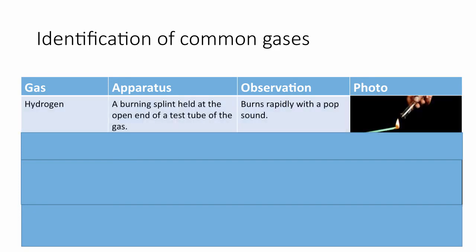So the first gas is hydrogen. And as you may know, this is a burning splint or a lighted splint. It's held at the end of the test tube. And if it is hydrogen, it burns with a pop sound or a squeaky pop.